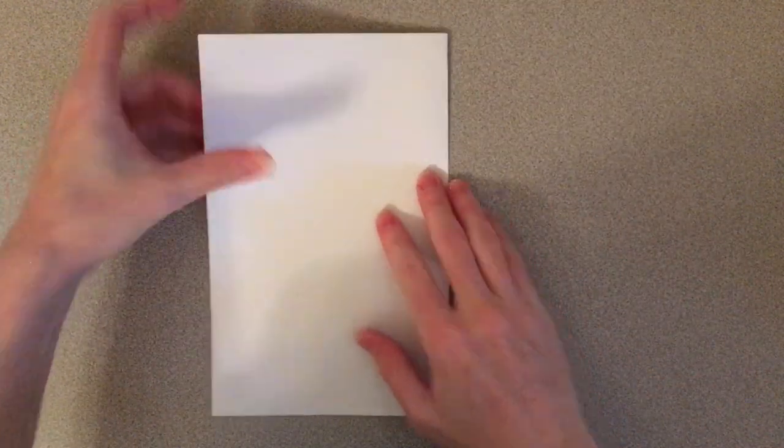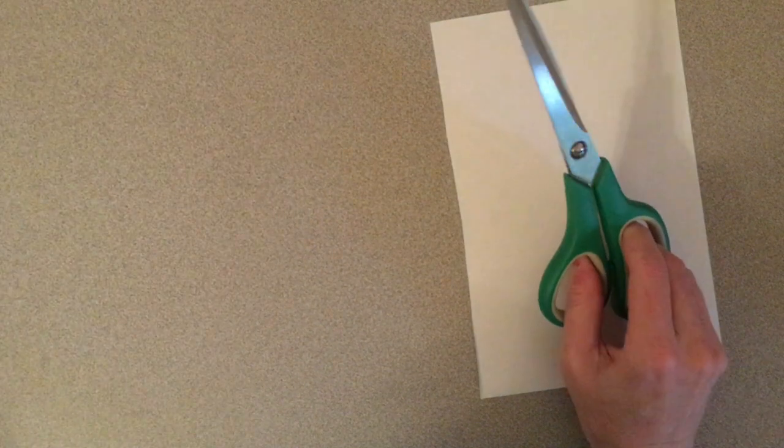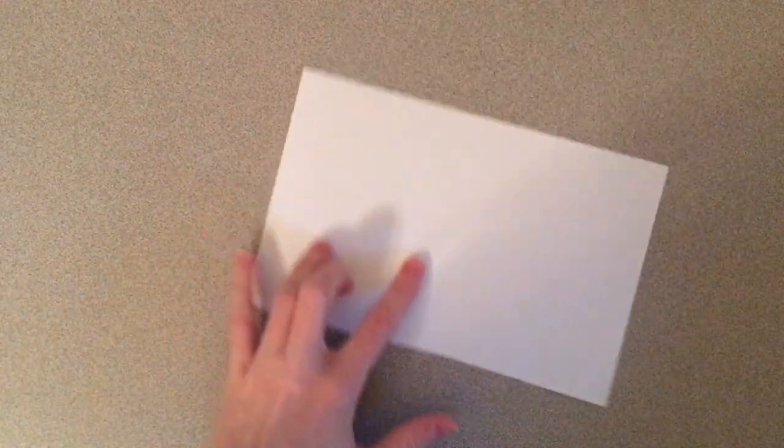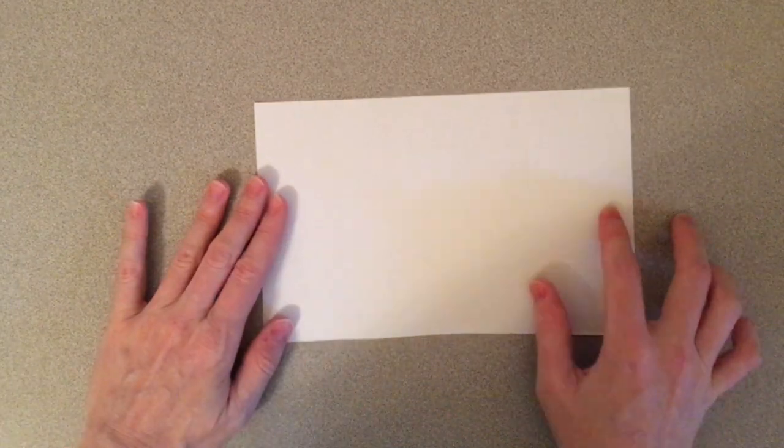To start with, take your paper and fold it in half. Give it a nice crease, open it back up, and cut along the fold. After you finish cutting, you should have two pieces of paper about the same size. Set one aside for later. And we'll start with a half sheet for our first design.